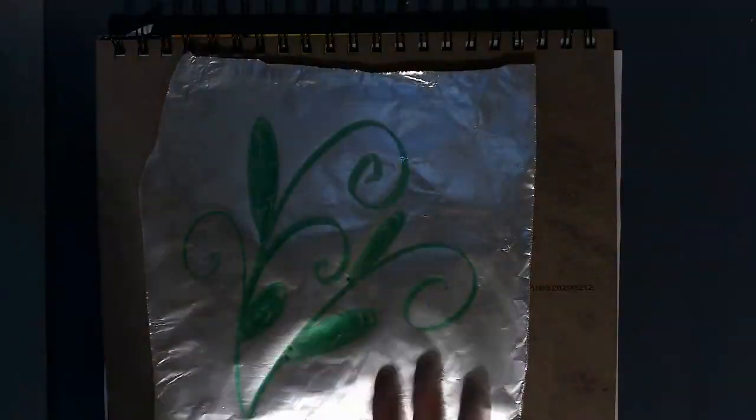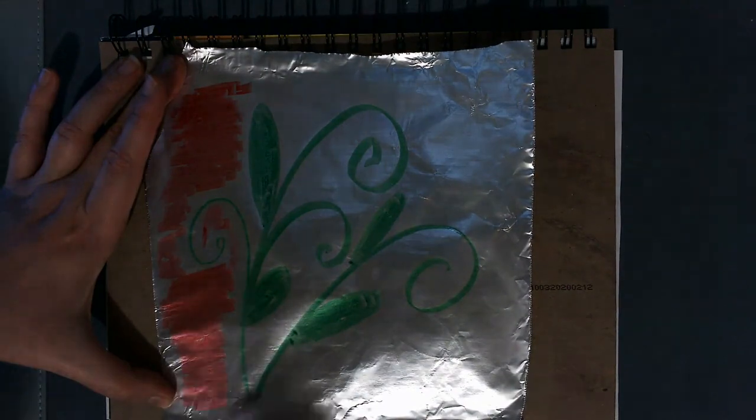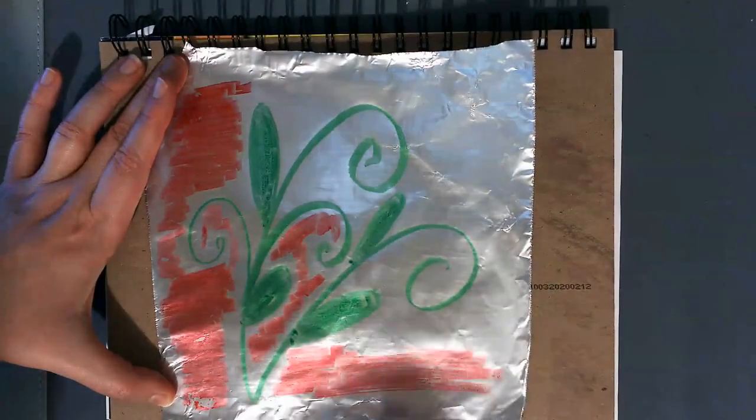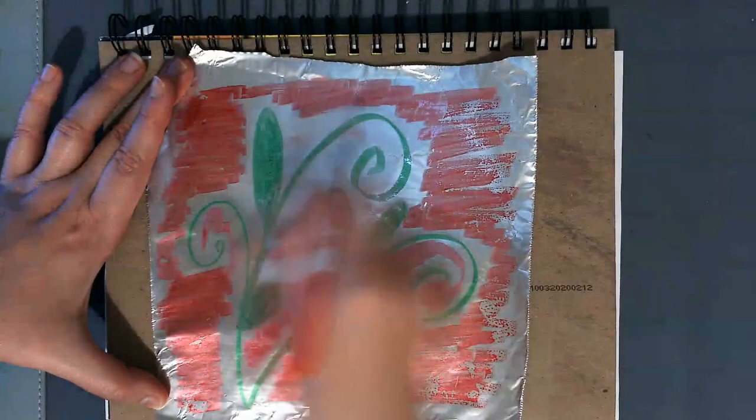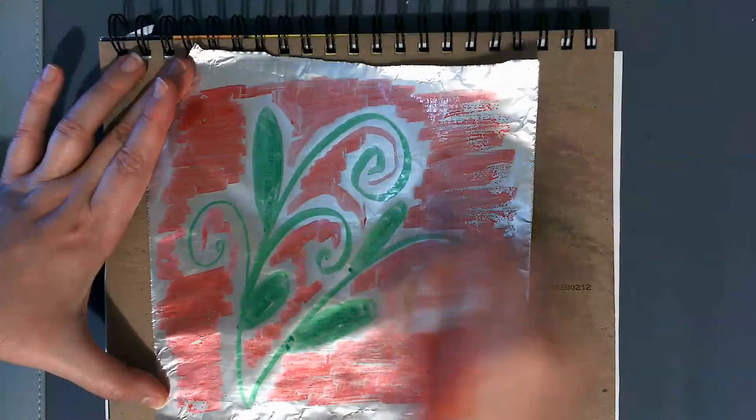Then I also chose to color the background. I just did red. I didn't want my colors to blend together so I kept a little bit of distance between my red and green, but you don't have to. You can put the colors right up next to each other if you choose to.